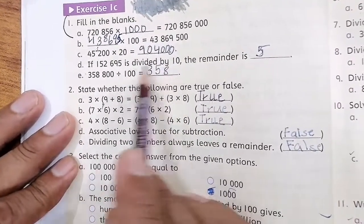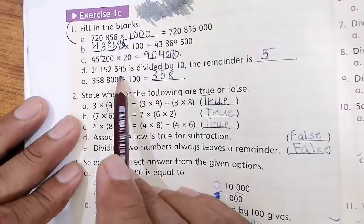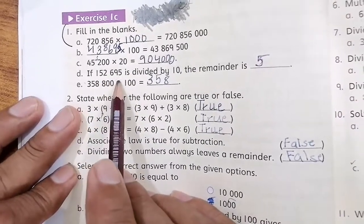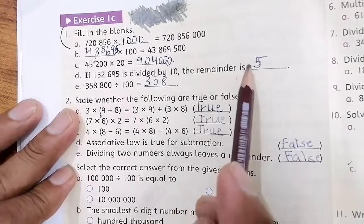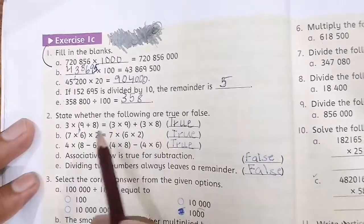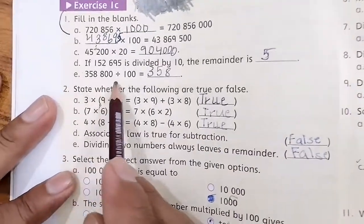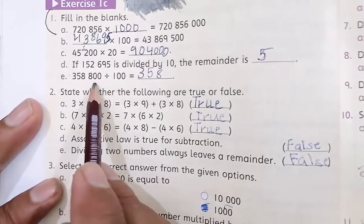The answer is 43869500. Part C is 45200 times 20 equals 904000. Part D, if 152695 is divided by 10, the remainder is 5, and 358400 divided by 100 equals 3584.